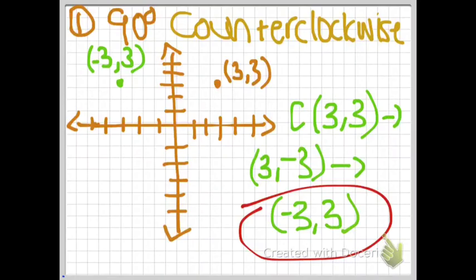Let's start with 90 degrees counterclockwise. You would have (3, 3) as your point. Then it would be changed into (3, negative 3) and flip those two in order to get (negative 3, 3). Then you would graph the point.